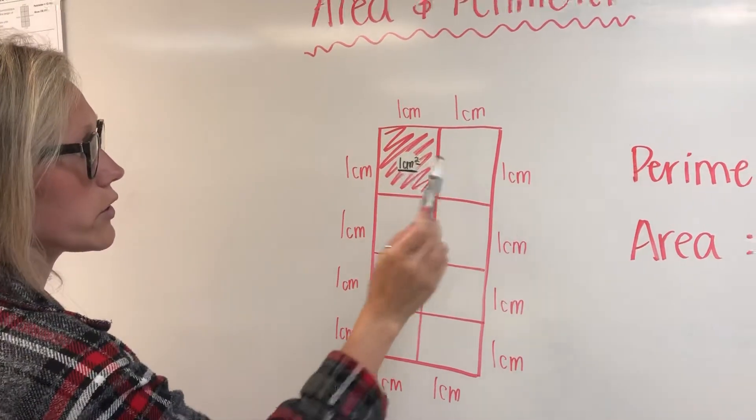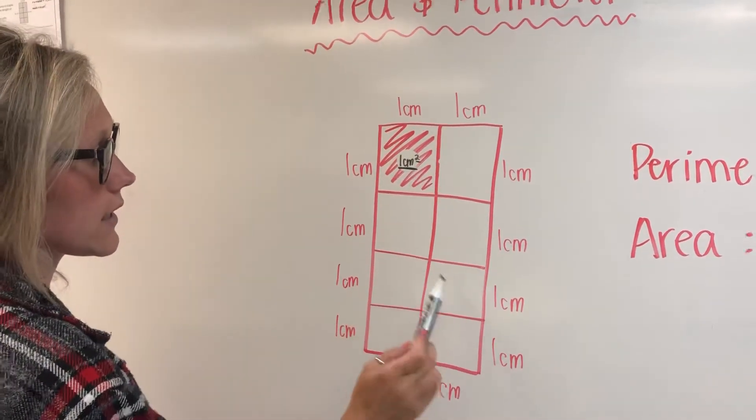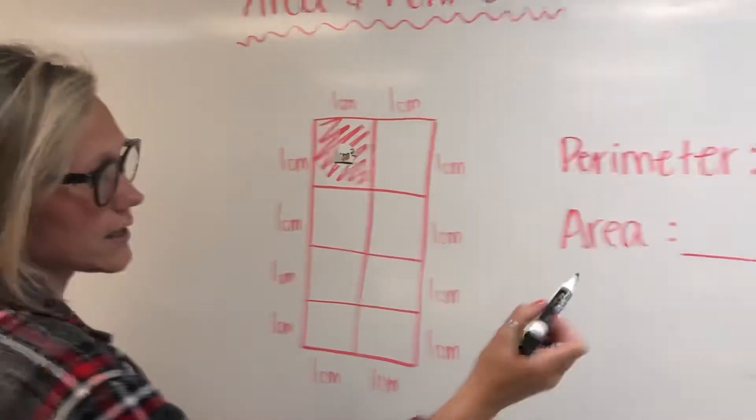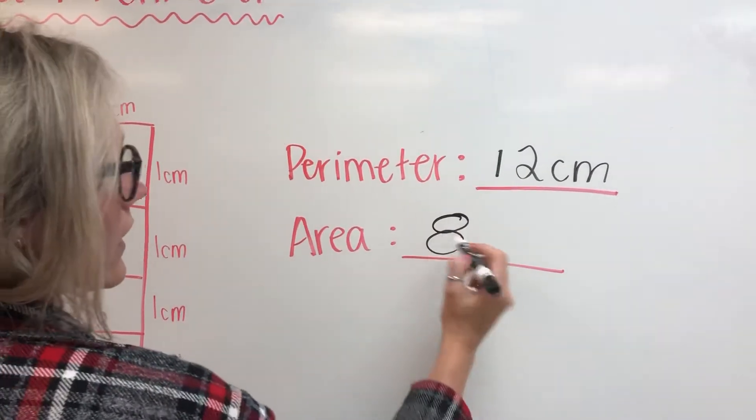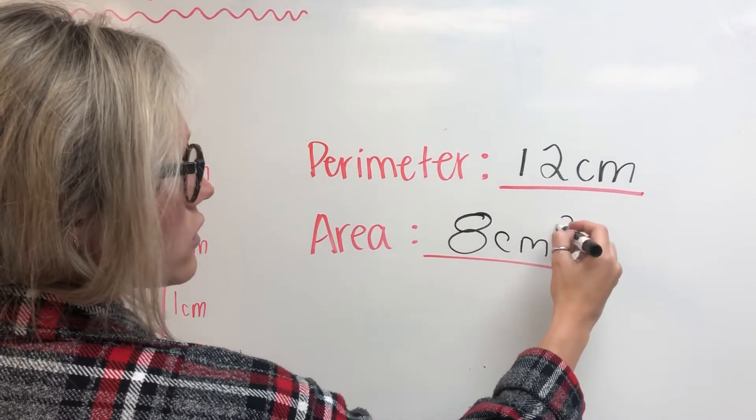So we have 1, 2, 3, 4, 5, 6, 7, 8. So our area is 8 centimeters squared.